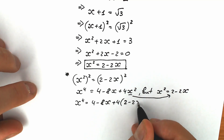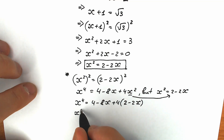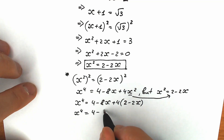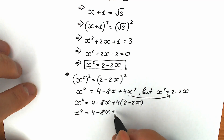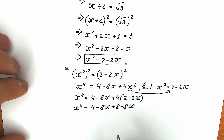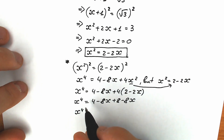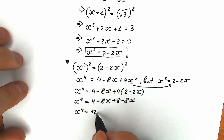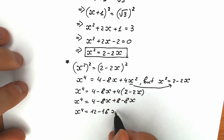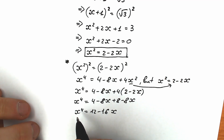So x to the 4th power equals 4 minus 8x plus 4 times the quantity 2 minus 2x. Expanding and collecting constants and variables: x to the 4th power equals 12 minus 16x. This is another extremely important expression.